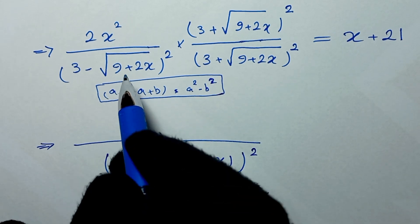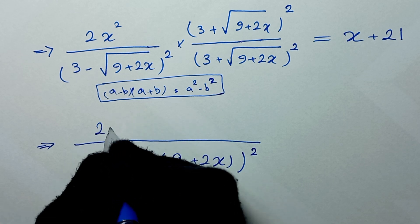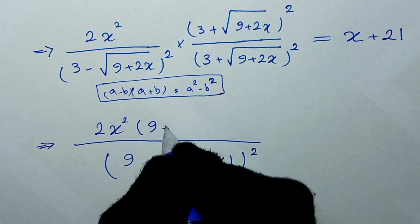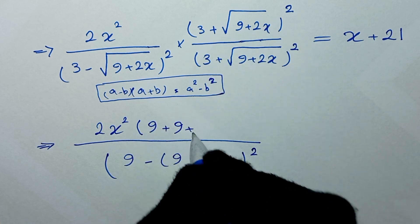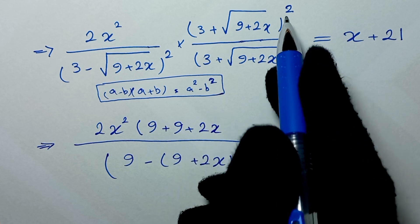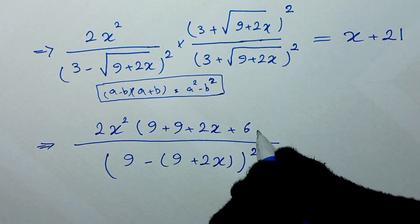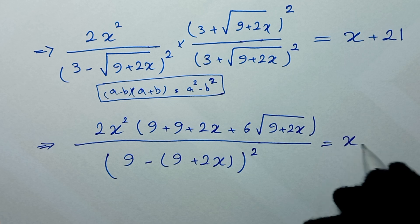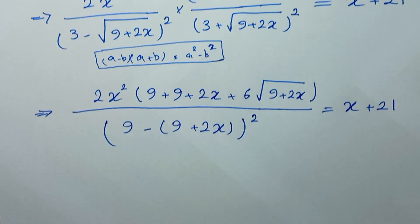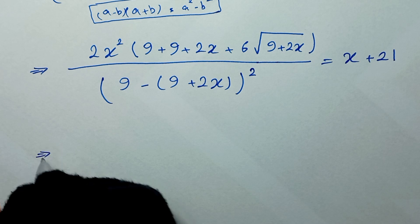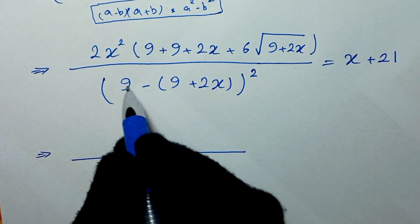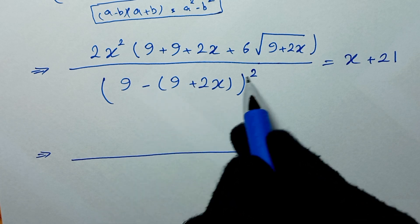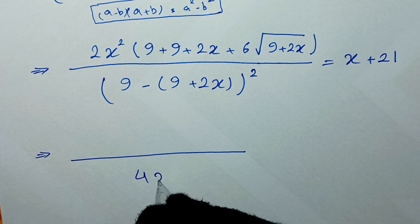For the numerator: 2x² times 3² gives 18, plus 2x² times 2x, plus 2x² times 6 square root of (9 plus 2x). The 9 minus 9 terms cancel to 0, and negative times 2x to the power of 2 gives negative 4x².